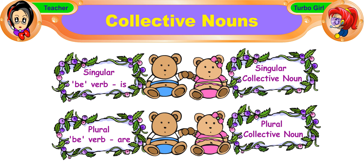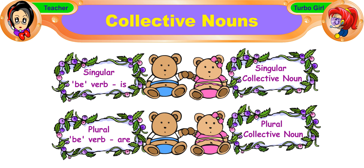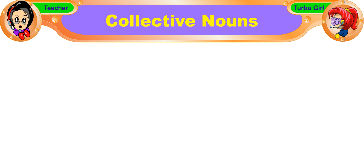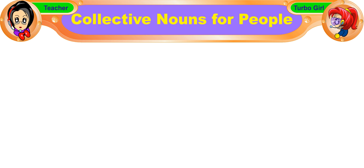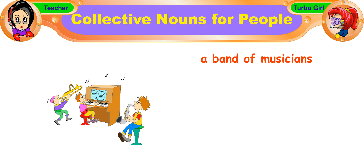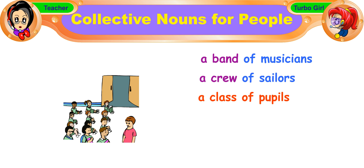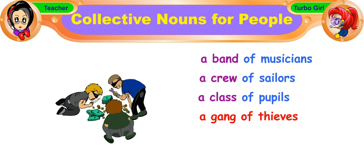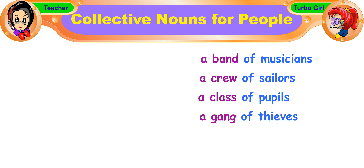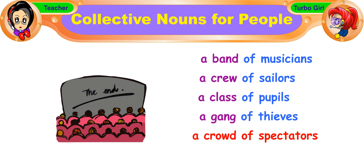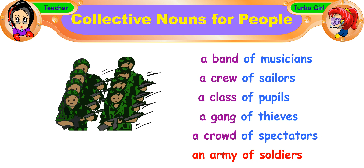That's right. Let's look at more collective nouns for people, animals and things. Learn them so that you can use them in your compositions and make them more interesting. These are collective nouns for people: a band of musicians, a crew of sailors, a class of pupils, a gang of thieves, a crowd of spectators, an army of soldiers.